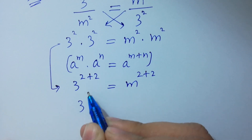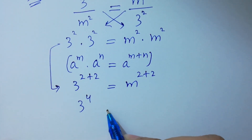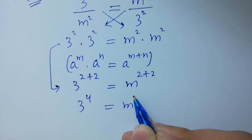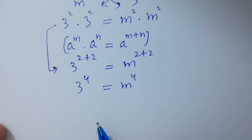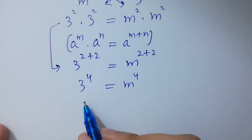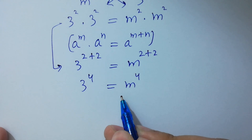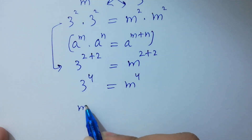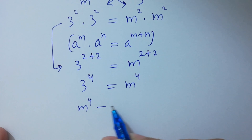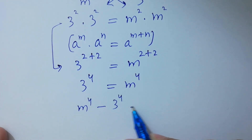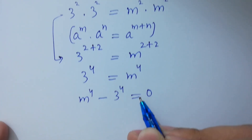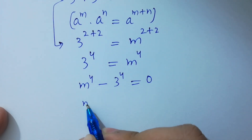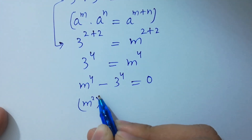So 2 plus 2 equals 4 for both sides, giving us 3 to the power 4 equals m to the power 4. This can be rewritten as m to the power 4 minus 3 to the power 4 equals 0.